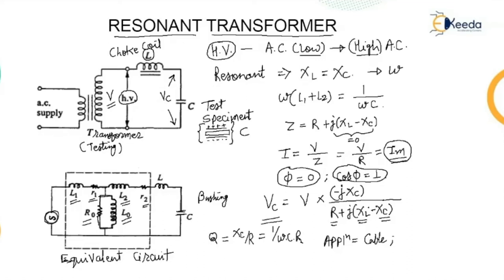The advantages of using a resonant transformer are: it gives a sine wave output, power requirement is less — almost 5 to 10 percent of the total kVA required — no high power arcing or heavy current surges occur, cascading is also possible for very high voltages, simple and compact test arrangement, and no repeated flashovers occur in case of partial failures. The disadvantage is that an additional variable choke capable of withstanding the full test voltage and full current rating is required, since we have to change the value of the choke to attain the resonance condition.